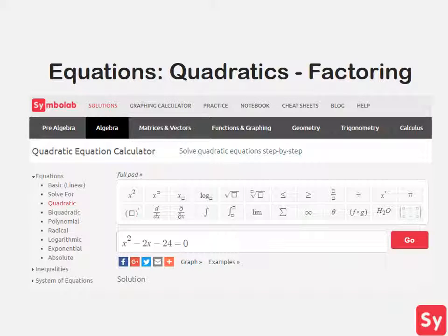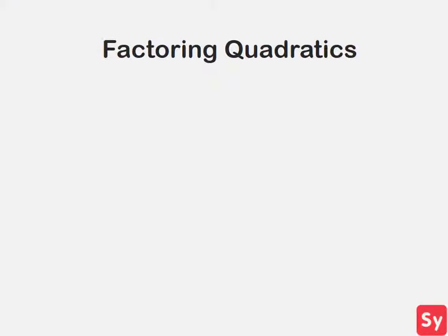Hey guys, it's Leah. Today we will talk about how to solve quadratic equations by factoring. We see quadratic equations in the form a times x squared plus b times x plus c equals zero. Factoring involves taking this equation and rewriting it by multiplying its two factors together.